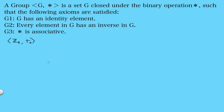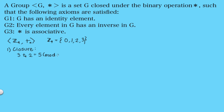Now let's look at the integers modulo 4 with addition modulo 4. This set contains the elements 0, 1, 2, and 3, which are equivalence classes — every integer is equivalent to one of these numbers modulo 4. For closure, any two elements added using addition modulo 4 wrap back around 4 and give an element in the set. For example, 3 plus 2 equals 5, and 5 modulo 4 equals 1, which is in the set. So this is closed under addition modulo 4.